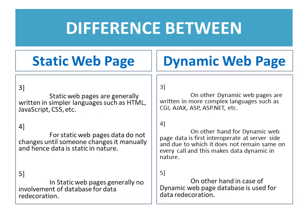Static web pages are generally written in simpler languages such as HTML, JavaScript, CSS, etc. On the other hand, dynamic web pages are written in more complex languages such as CGI, AJAX, ASP, ASP.NET, etc.